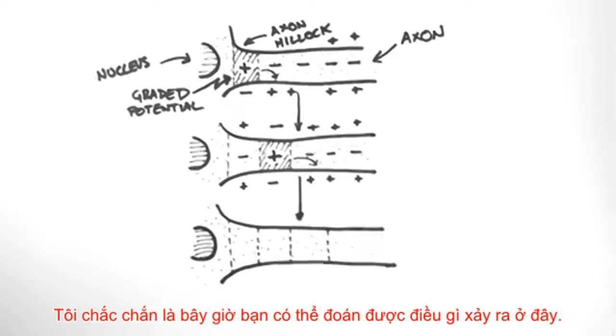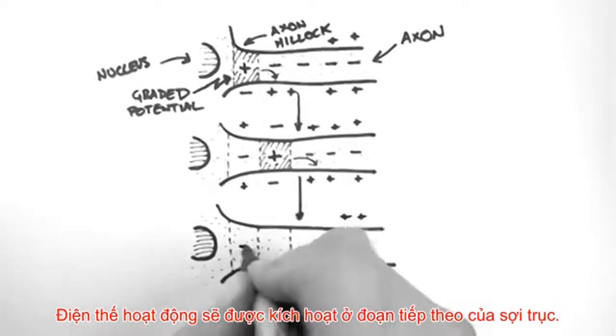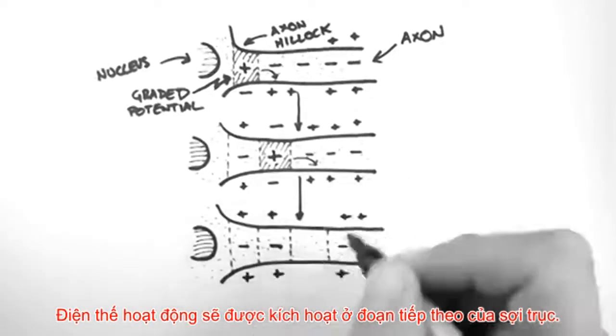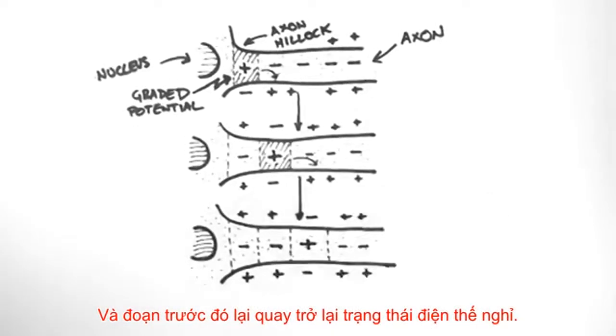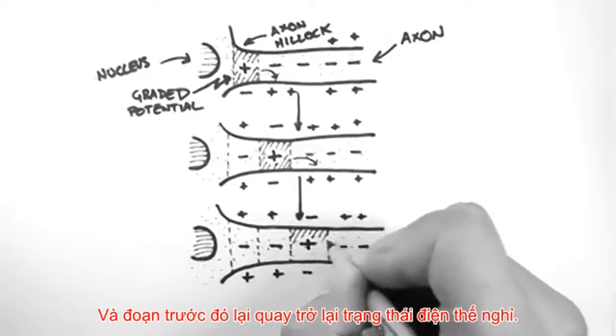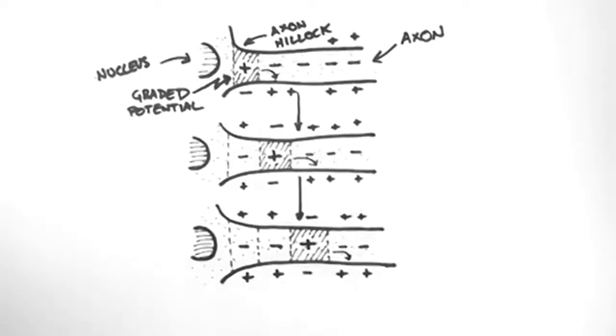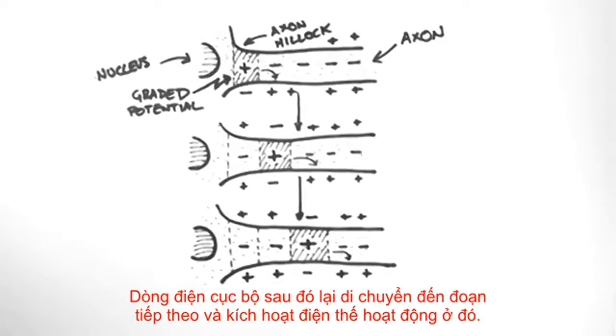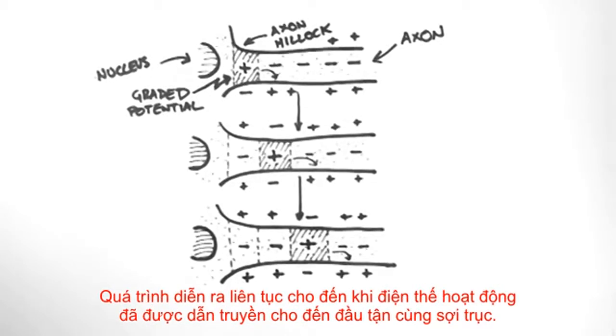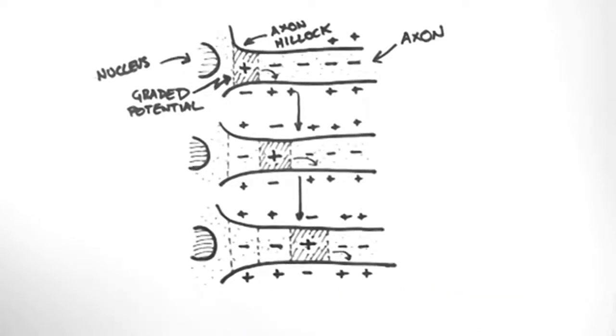Now I'm sure you can guess what happens here. There is an action potential triggered in the next segment of this axon, and meanwhile the previous segments have returned to their resting membrane potential. The local current flow then moves into the next segment of the axon and triggers an action potential in that segment. And this process continues until the action potential has propagated all the way down the axon.